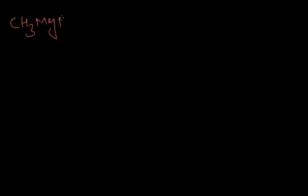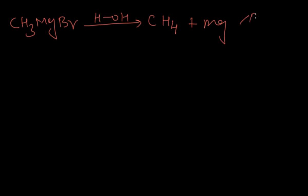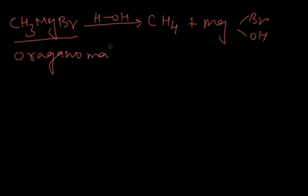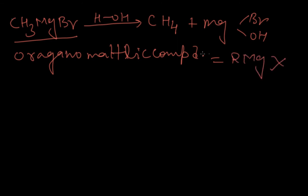For example, if we take CH3MgBr (Grignard reagent) and react it with water, we get back the alkane along with Mg(Br)(OH). This is a very important reaction that can be asked in exams. Grignard reagent is an organometallic compound — any organic compound which has a metal in it (R-MgX) is called an organometallic compound. This is very important for conversion reactions, such as getting alkane from haloalkane.